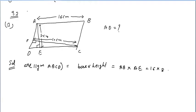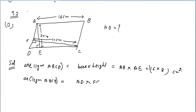So AB equals 16 and AE equals 8. I am not going to multiply because I need to divide it again. Also, area of parallelogram ABCD can be computed taking base as AD and height as CF. AD is not given but CF is given as 10.